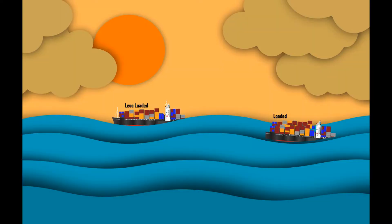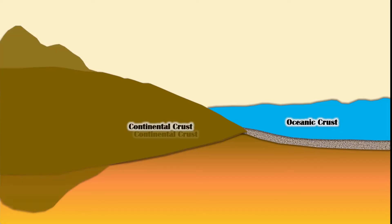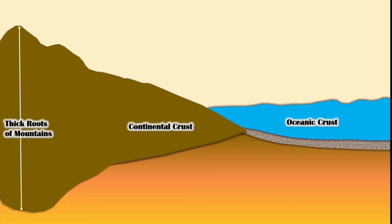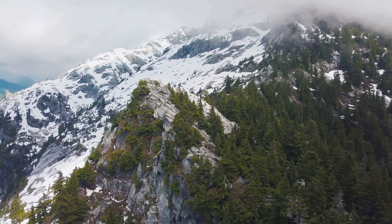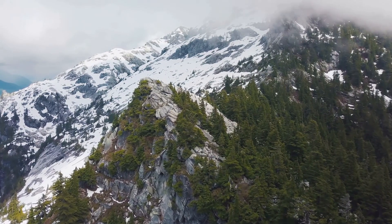Within continental lithosphere, mountain ranges are less dense and also quite high, and each mountain has roots deep enough to balance the buoyant force. The taller the mountain, the deeper will be the roots.